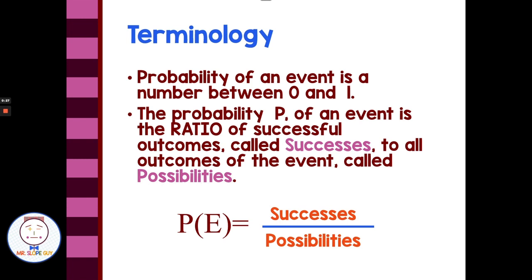Seeing this written as a formula makes the most sense: we have the probability of an event — that E in parentheses will be the event we're looking for — and we have the fraction of successes over the total possibilities. Successes would be the things we're looking for; possibilities would be all the things that could possibly happen.